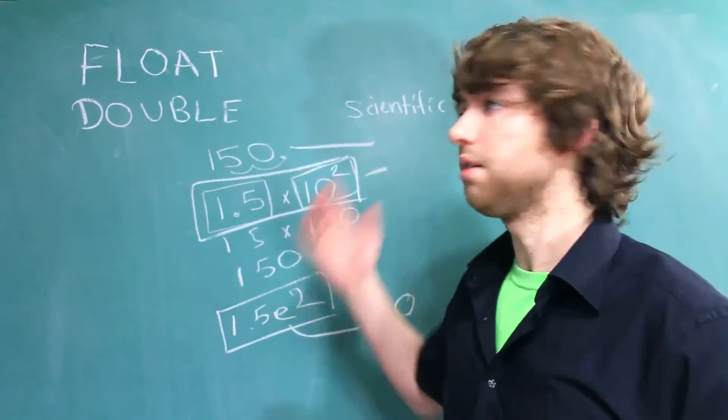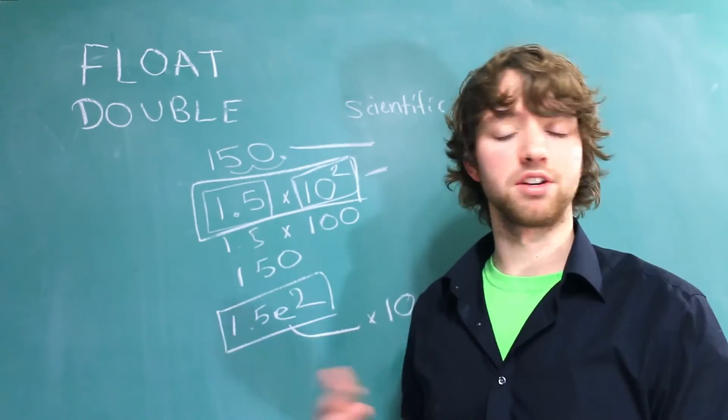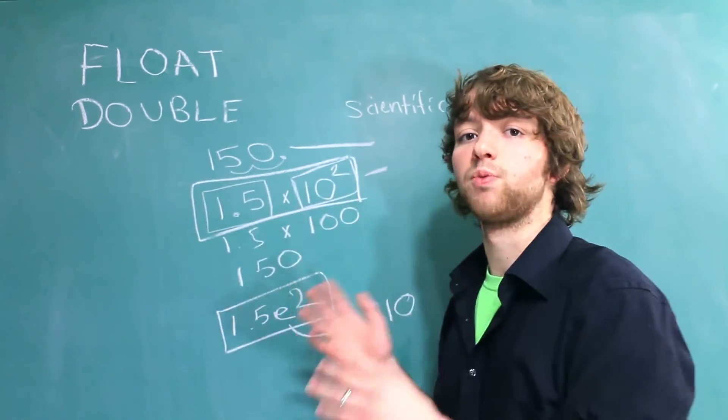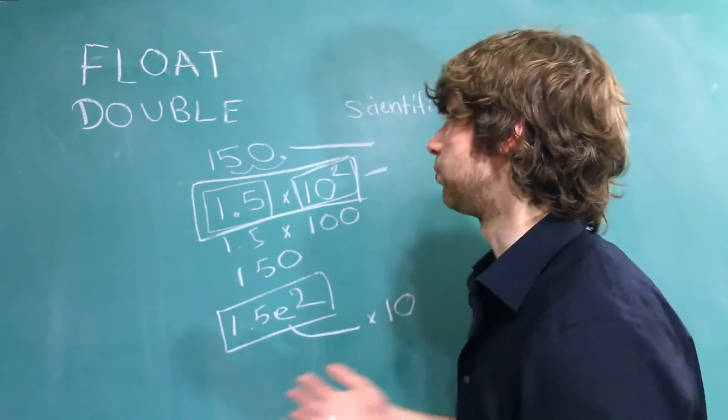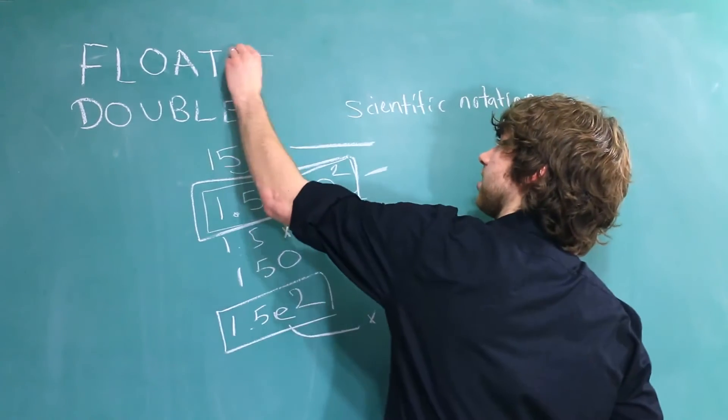That means when we store a number in one of these data types, we're not just storing the number. We are storing the sign bit, whether it's positive or negative. We are storing what to multiply the number by, and we are storing the number itself. So when we have a certain size for one of these, for example, float takes up 4 bytes.